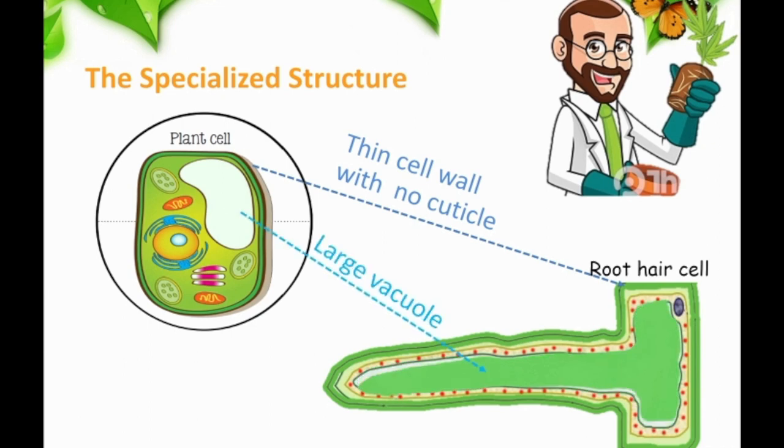Large vacuole inside keeps the cell firm. Lots of mitochondria create energy for active transport. Unlike most plant cells, there is no chloroplast in the root hair cells.